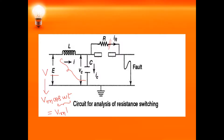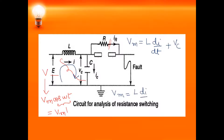Applying KVL to the first loop gives: Vm = L·(di/dt) + Vc, where Vc = (1/C)·∫ic dt. This is the first equation. We can observe that the total current I splits into two components, ic and ir. Applying KCL gives: I = ic + ir. This is the second equation needed to find the value of resistance R.